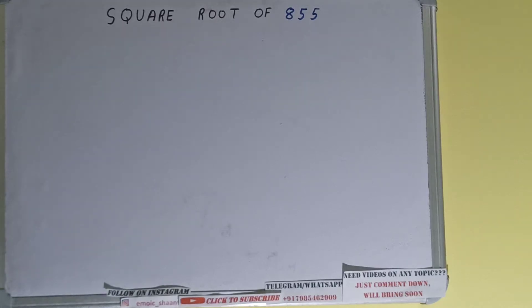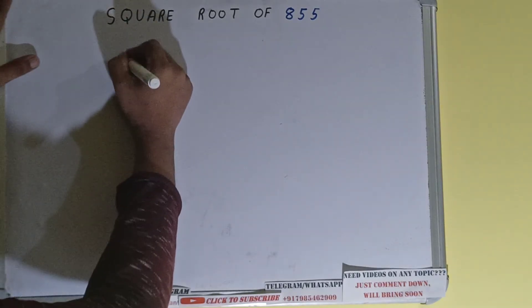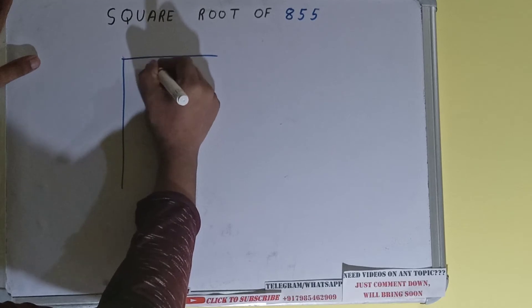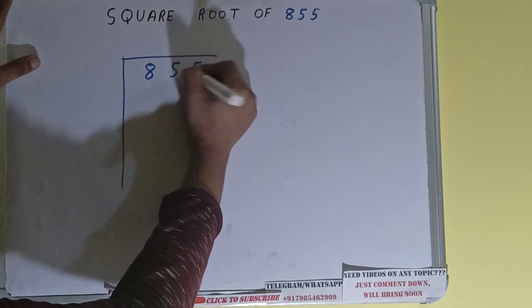Hello friends, in this video I'll be helping you with the square root of the number 855, so let's start. We'll be using a division method, so first we need to write the number like this.